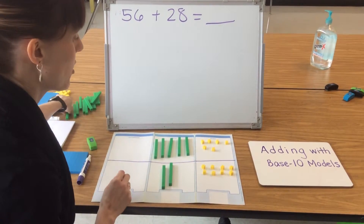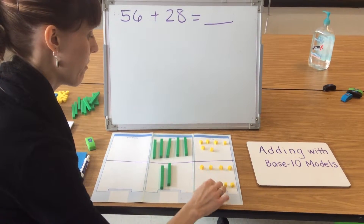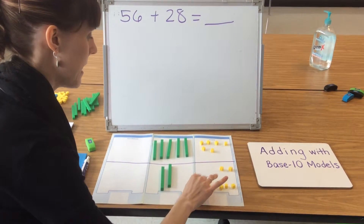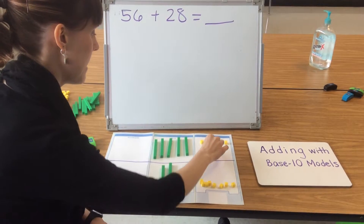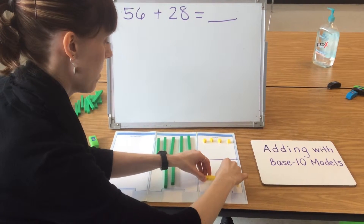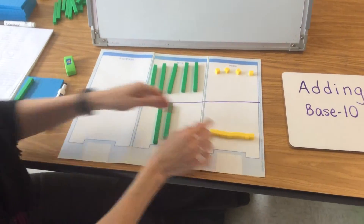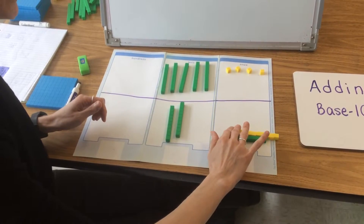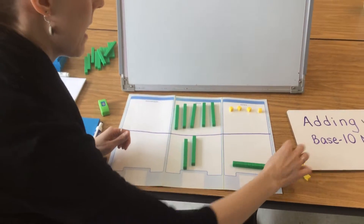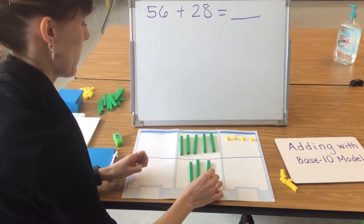So what I'm going to do is make a trade. I'm going to count out 10 ones: 1, 2, 3, 4, 5, 6, 7, 8, 9, 10. These 10 ones, if they were put together, would look exactly like the tens blocks — they are the same as 1 ten. By making a trade, I'm just changing the way they look from 10 ones into 1 ten. After I group the ones, I have to move it into the tens place.